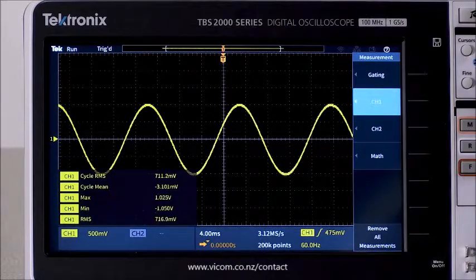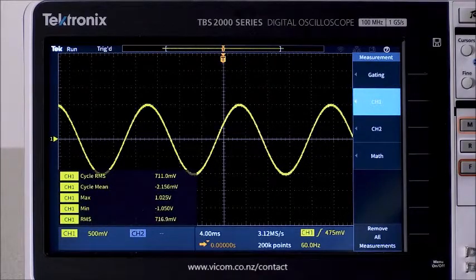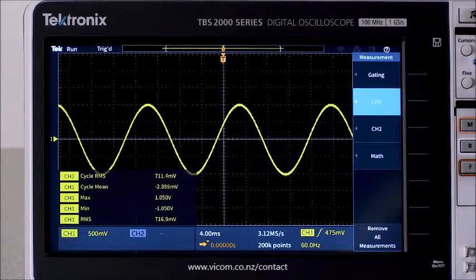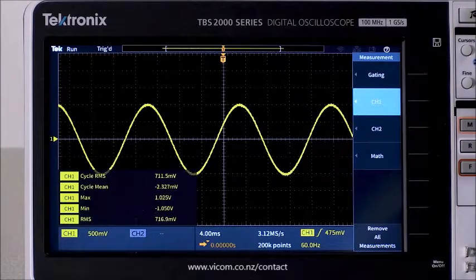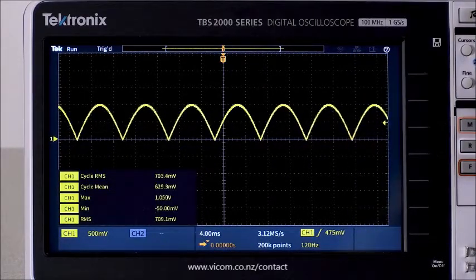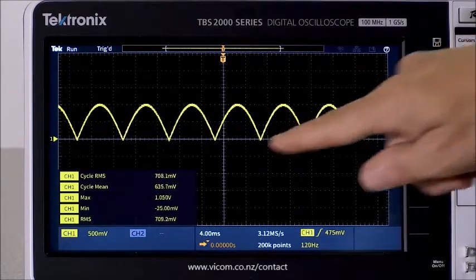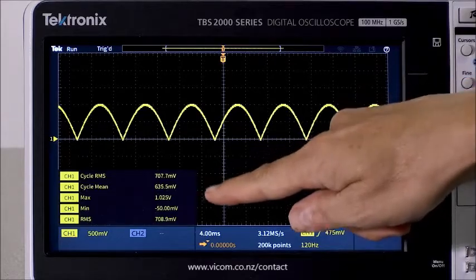I'll switch back to sine on my function generator. And as I mentioned earlier, the RMS value is independent of signal polarity. Let's prove it to ourselves by feeding a rectified version of this sine wave into the scope. Even after full wave rectifying the sine wave, the RMS value stays at 71% of the max.